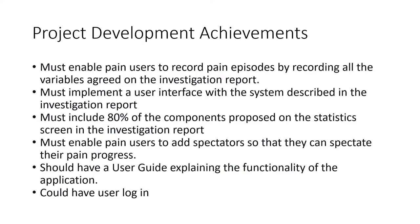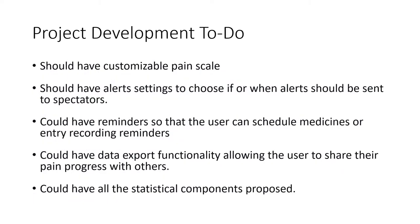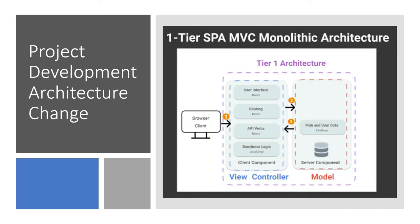Next, we review the project development achievements. Regarding app functionality, all the most important functionalities were developed during this stage. The less important functionalities could not be implemented due to time constraints, and a week's work is estimated to reach 100% of the proposed functionality. It is worth mentioning that there was a significant project development change. Due to a shortage of experience and time to learn Node.js and Express, the project architecture changed and the business logic was moved to the front end. This will need to be changed in the future to avoid security and privacy risks.